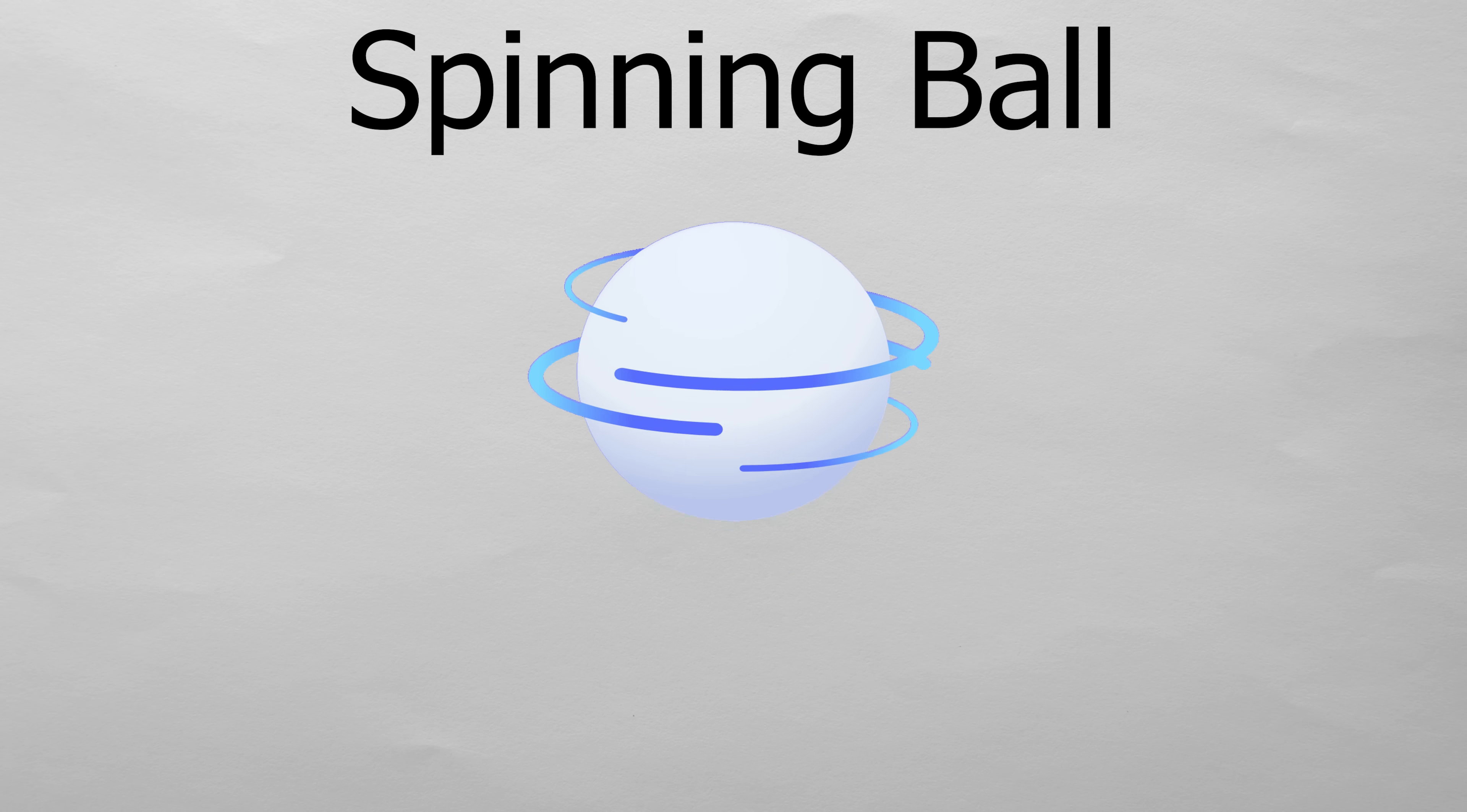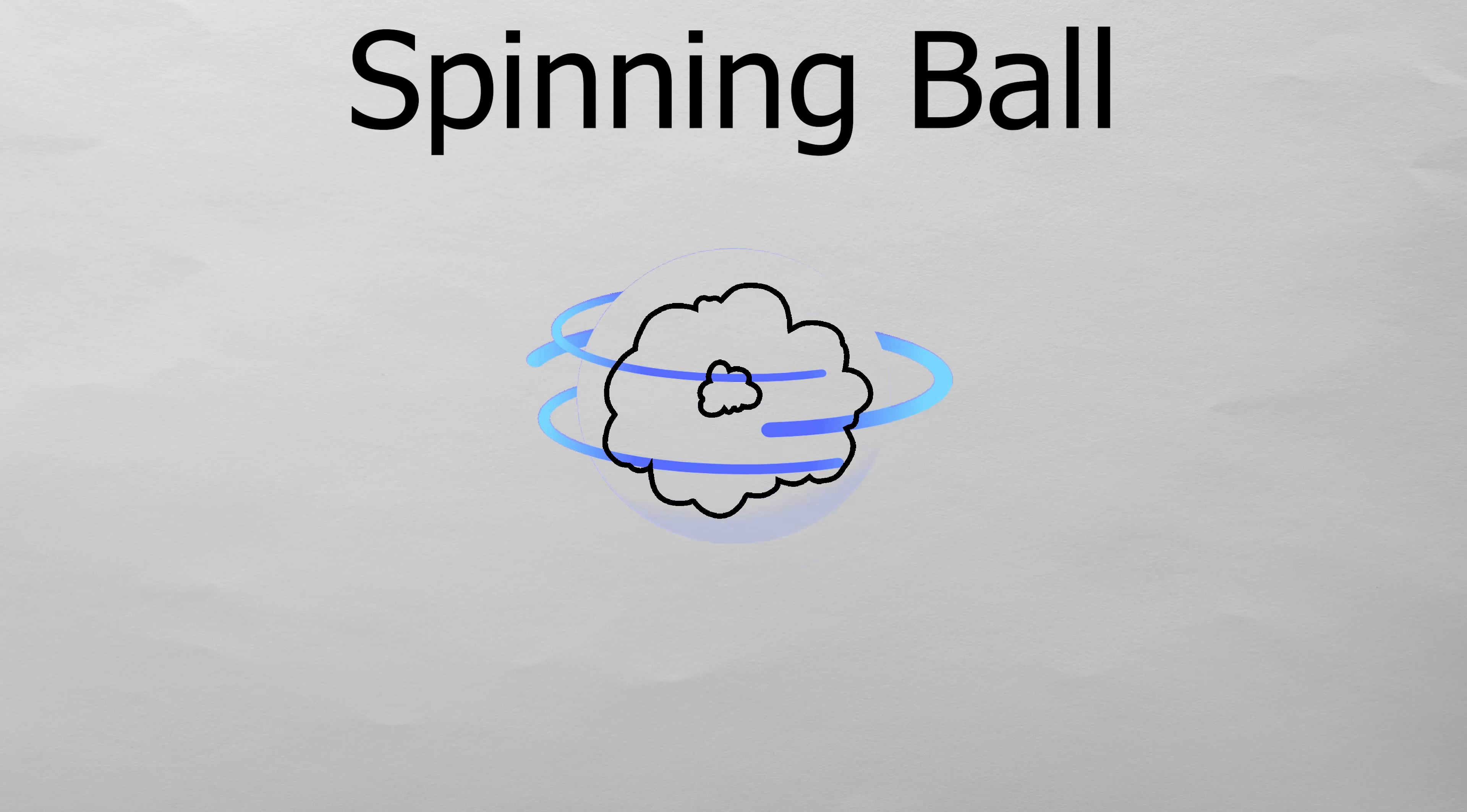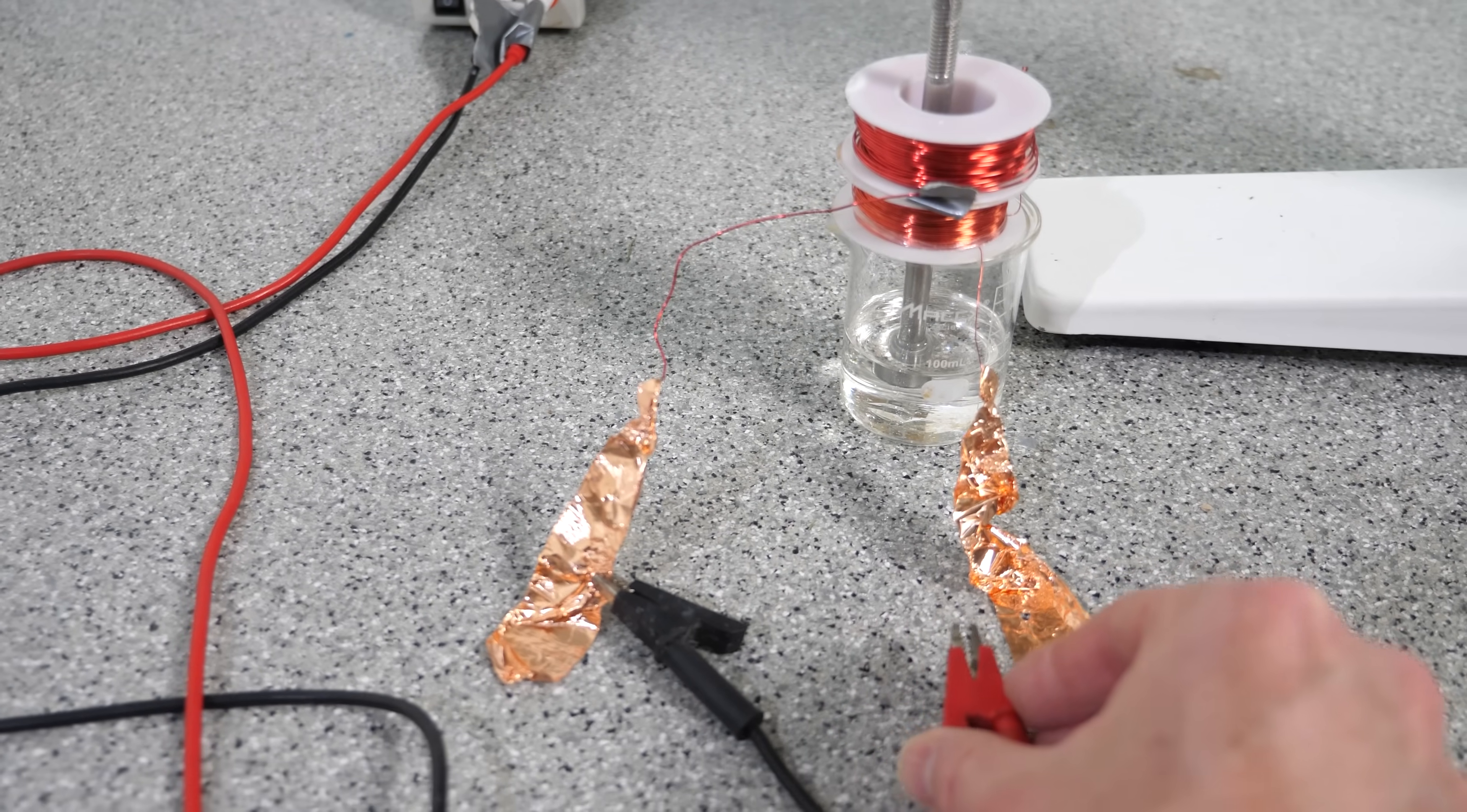Imagine a spinning ball, except an electron isn't a ball, and it's not actually spinning. But today I'm going to show you an experiment that proves electrons have intrinsic angular momentum.